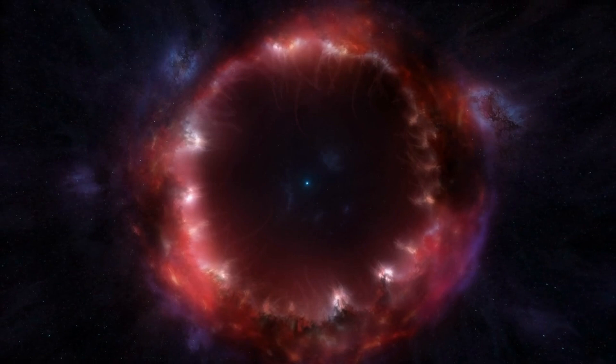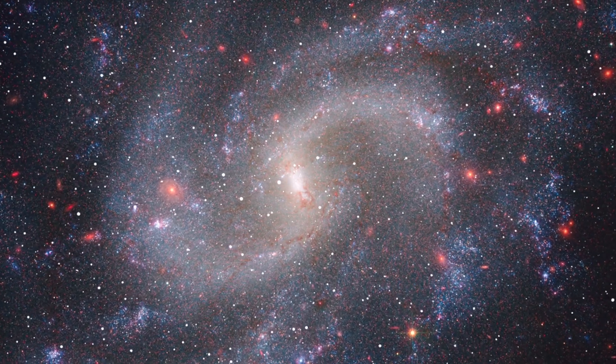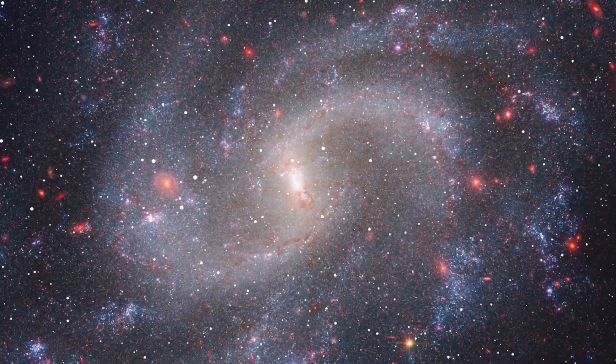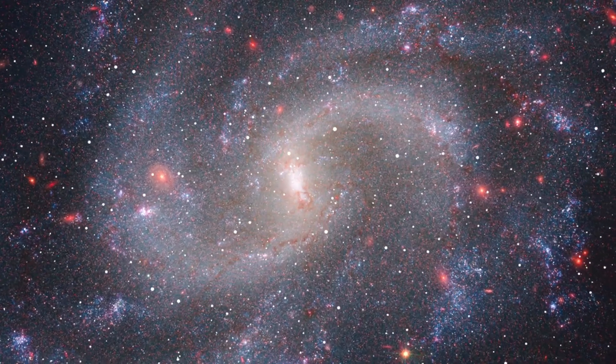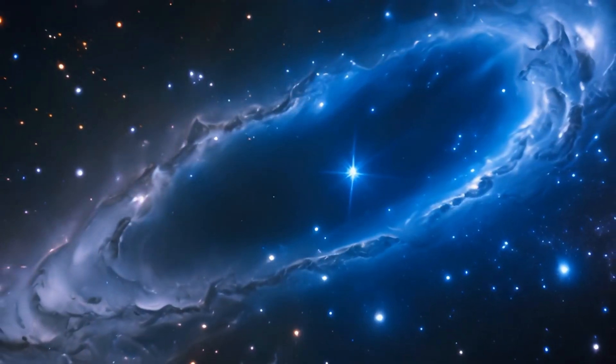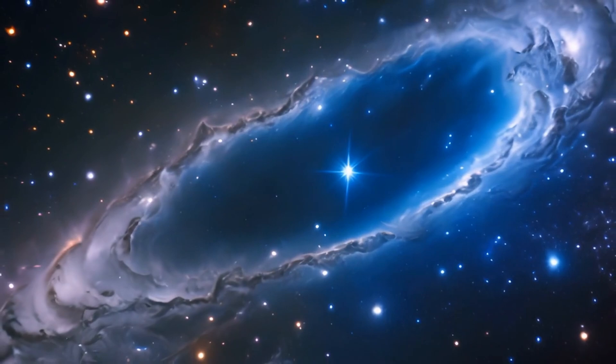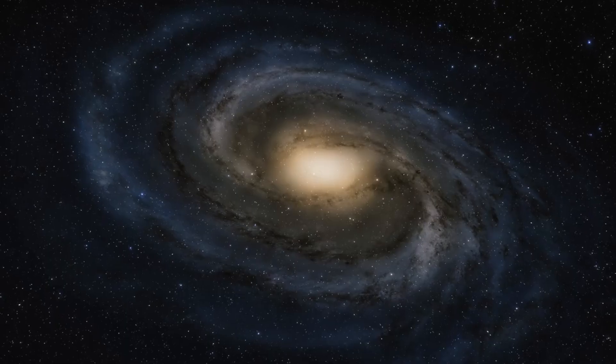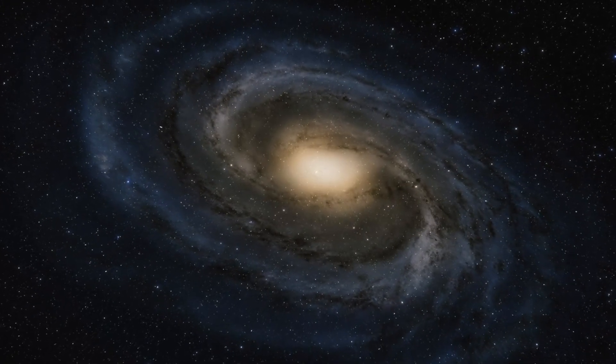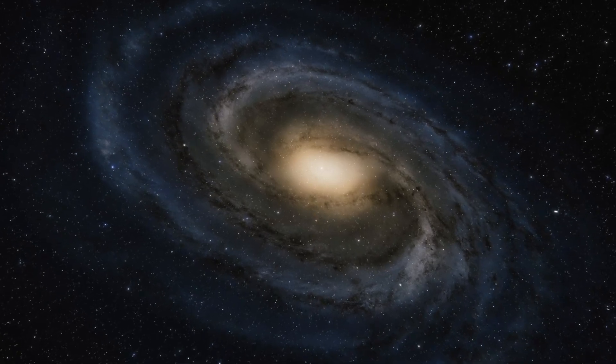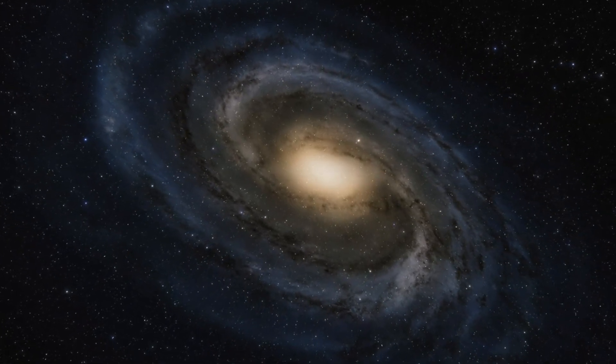As observed, the galaxy has a mass of about 10 billion solar masses and a size of about 2 kiloparsecs or 6,500 light-years. It has a disk-like structure with two prominent spiral arms and a central bulge. It also has a blue color, which indicates that it is actively forming new stars.